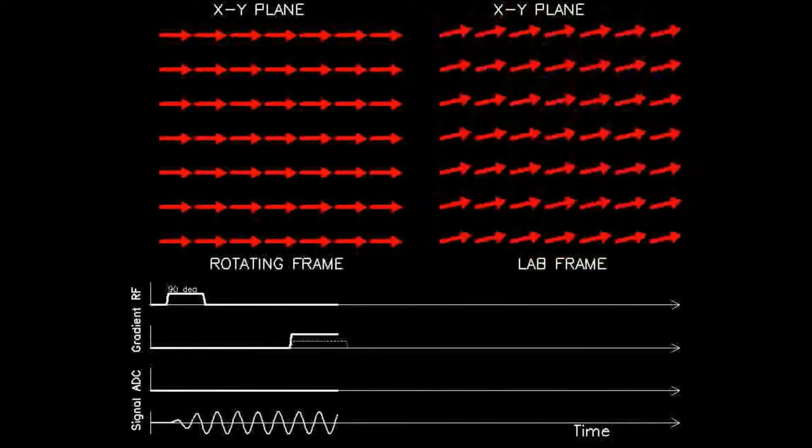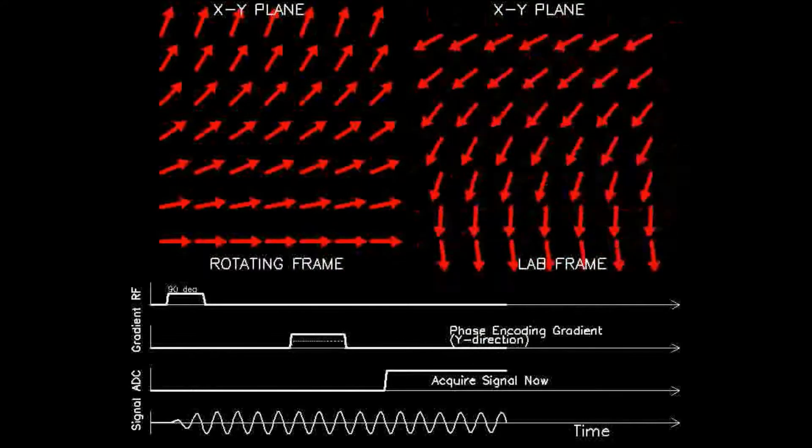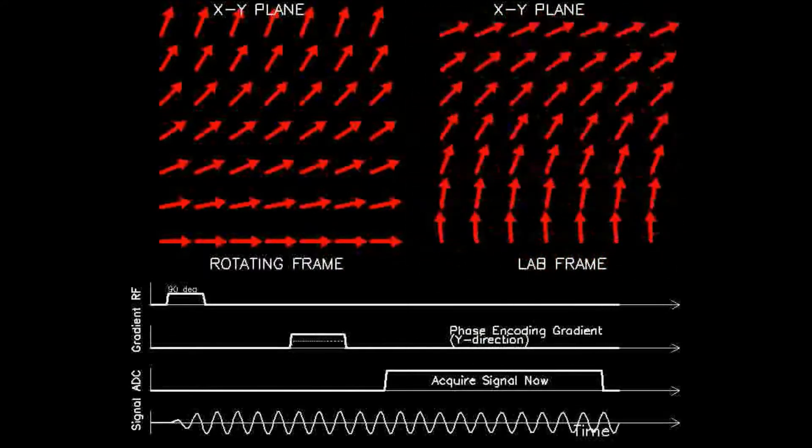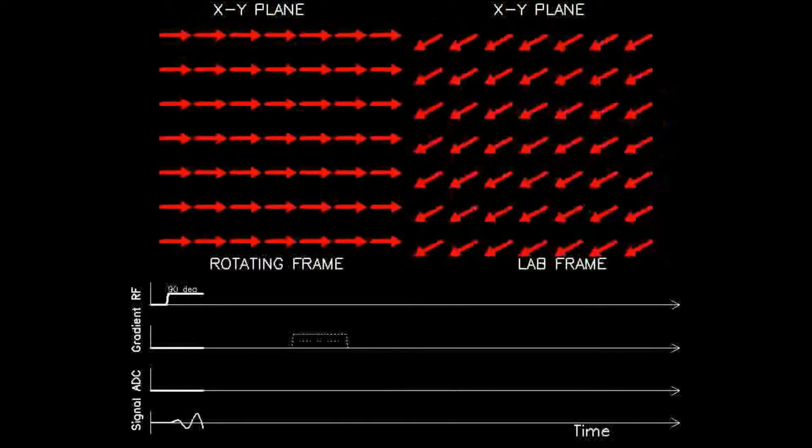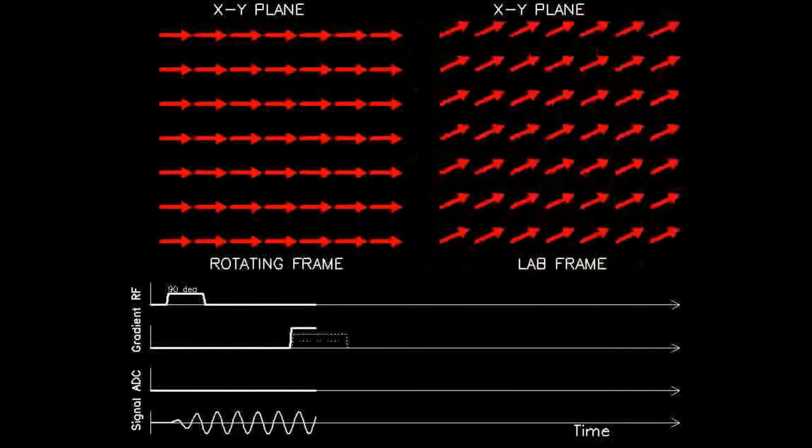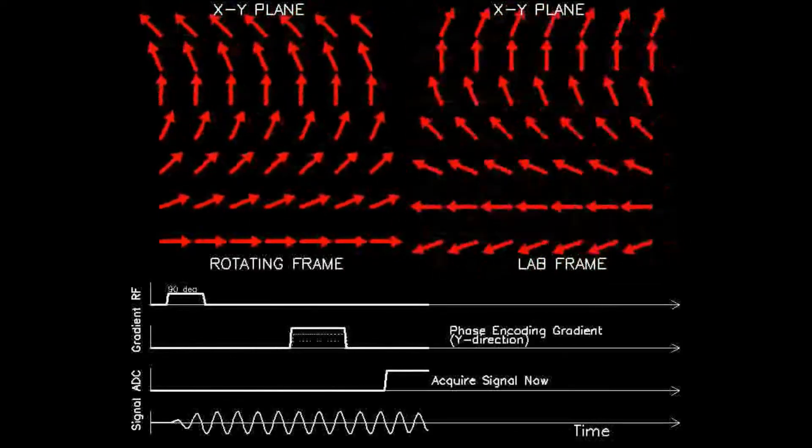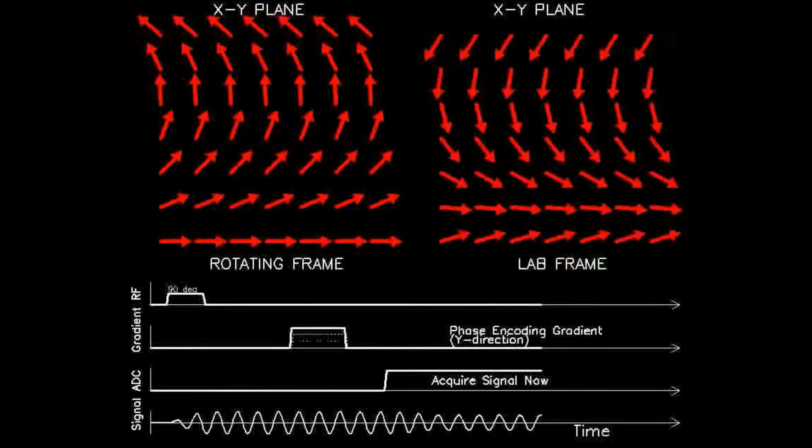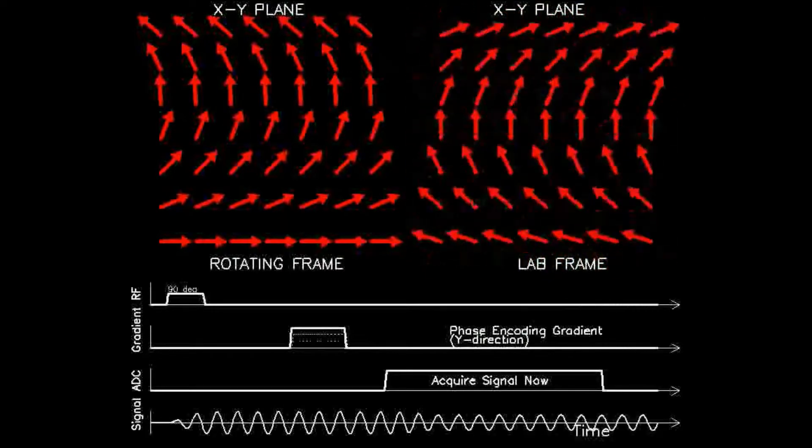Importantly, this change only occurs when the gradient is on, during which the adjusted frequencies cause all spins to increasingly dephase. When the gradient is turned off, the dephasing stops and all spins remain fixed in their new relative phases.